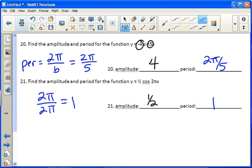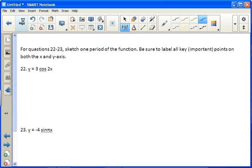Okay, 22 and 23, we need to sketch one period of the function. So first, my general shape for cosine starts up top, goes down, and comes back up to where it started. And we see here that the amplitude is 3. So that means I go as high as 3, or as low as negative 3.